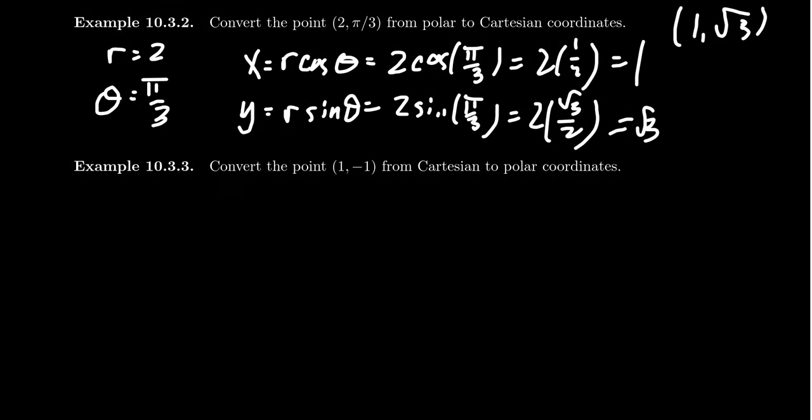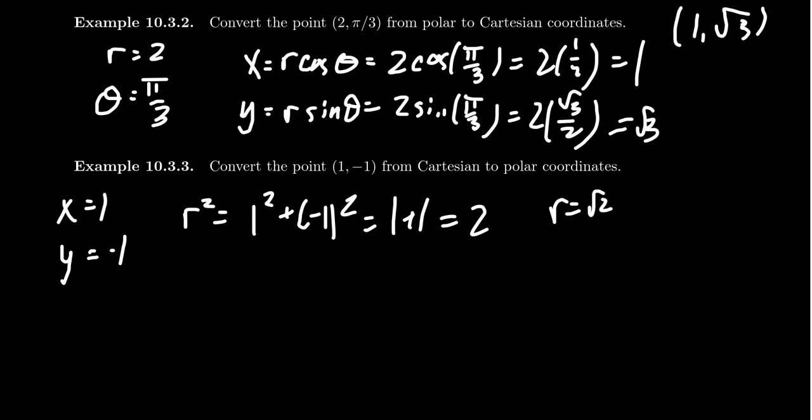If we have the Cartesian coordinate 1 comma negative 1 and we want it to be polar, x equals 1 and y equals negative 1. So r squared equals 1 squared plus negative 1 squared, which is 1 plus 1 equals 2. So r equals the square root of 2. Tangent of theta equals negative 1 over 1, which is negative 1, so arc tangent theta equals arc tangent of negative 1, which equals negative pi fourths.